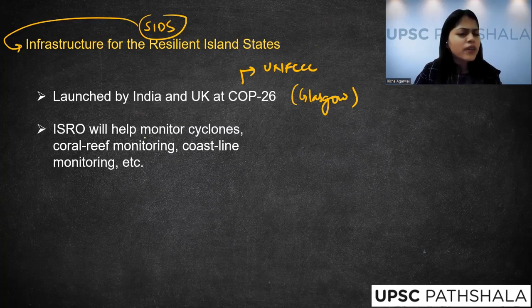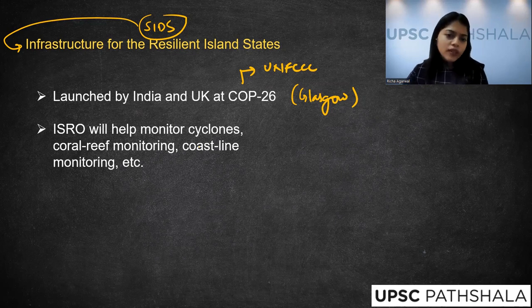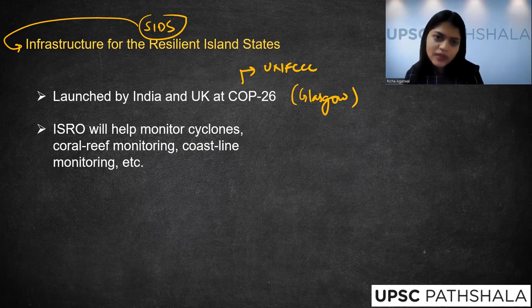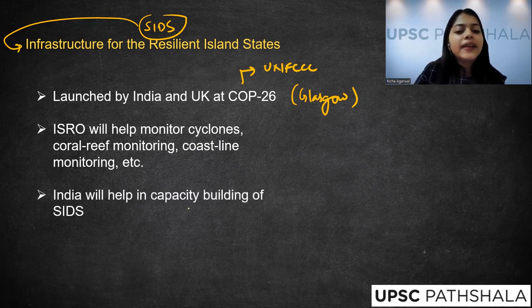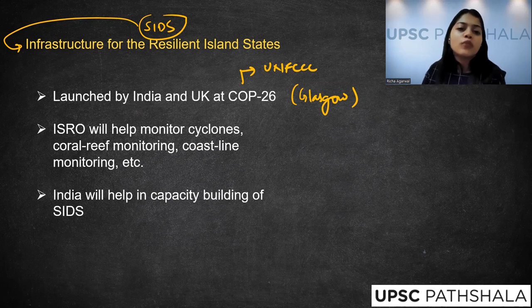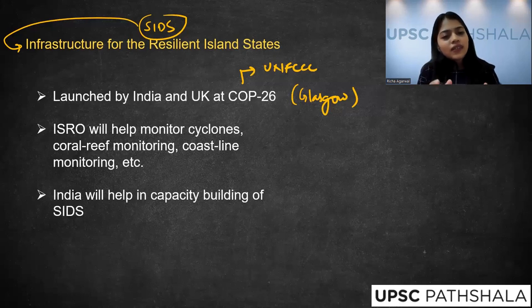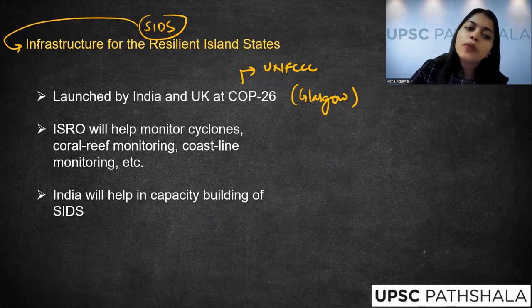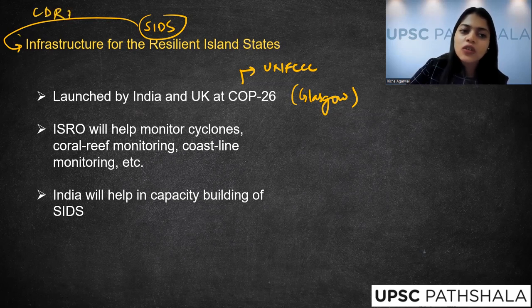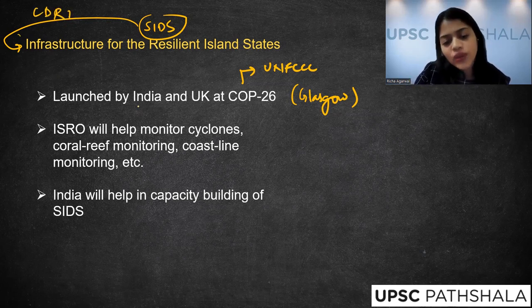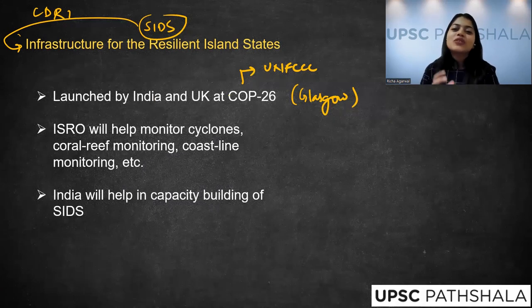ISRO will help monitor cyclones, coral reefs, and coastlines for these Small Island Developing States, providing real-time information to make them resilient. India will also help in their capacity building — once they receive the information, India will help them how to disseminate it, make use of it, and create disaster resilient infrastructure. This is the objective of Infrastructure for Resilient Island States, a project under CDRI launched by India and the UK at COP26.